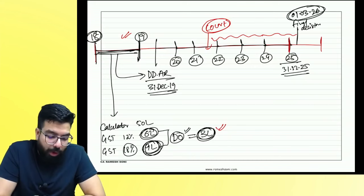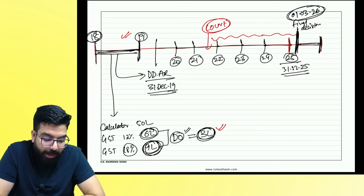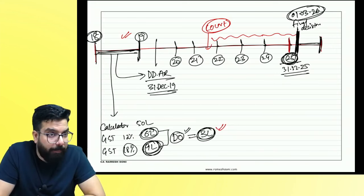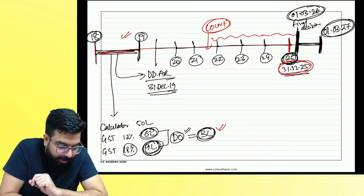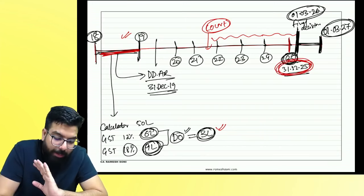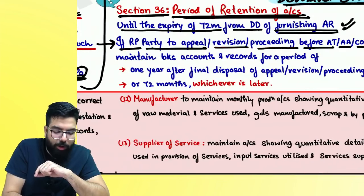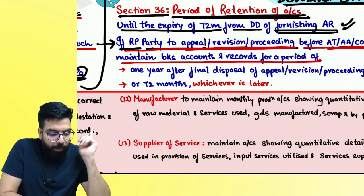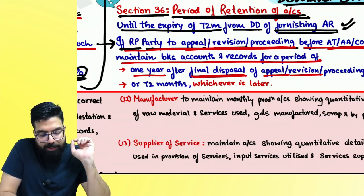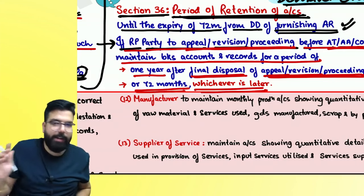So the rule is: maintain accounts for 72 months, or one year after the final decision of the appeal — whichever is later. Example 1: Final decision came 1st May 2025; one year over 1st May 2026. 72 months = 31st December 2029. Maintain till 31st December 2029 (later). Example 2: Final decision came 1st May 2030; one year over 1st May 2031. 72 months already passed. Maintain till 1st May 2031 (later).